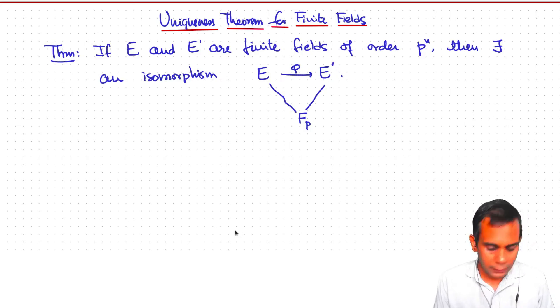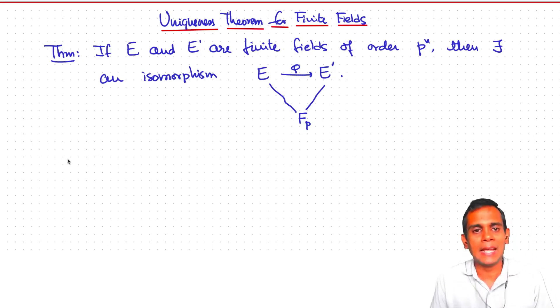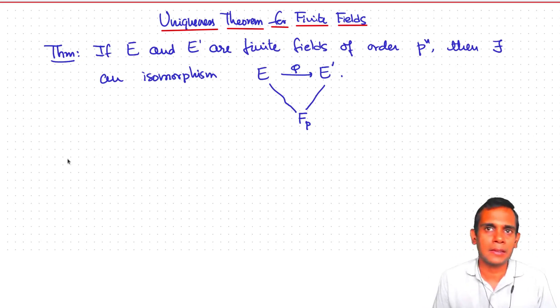Now, the proof of this is as follows. We will express E as a quotient of Fp modulo an irreducible polynomial. What we do is, we know that E star is the group generated by some element alpha.